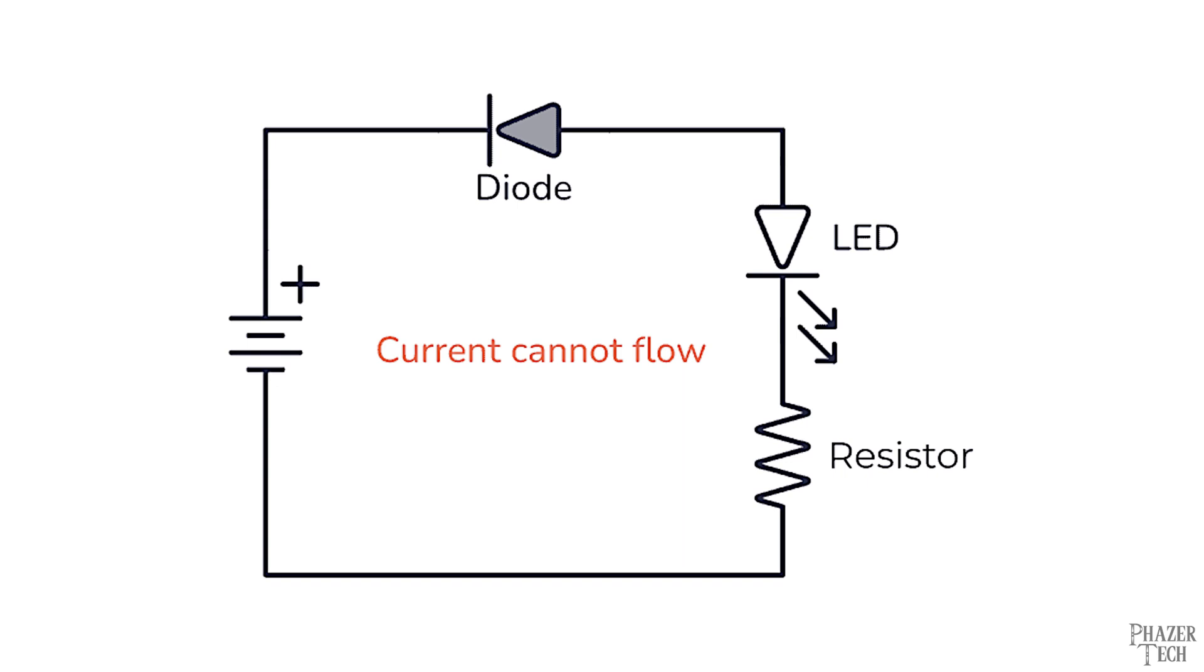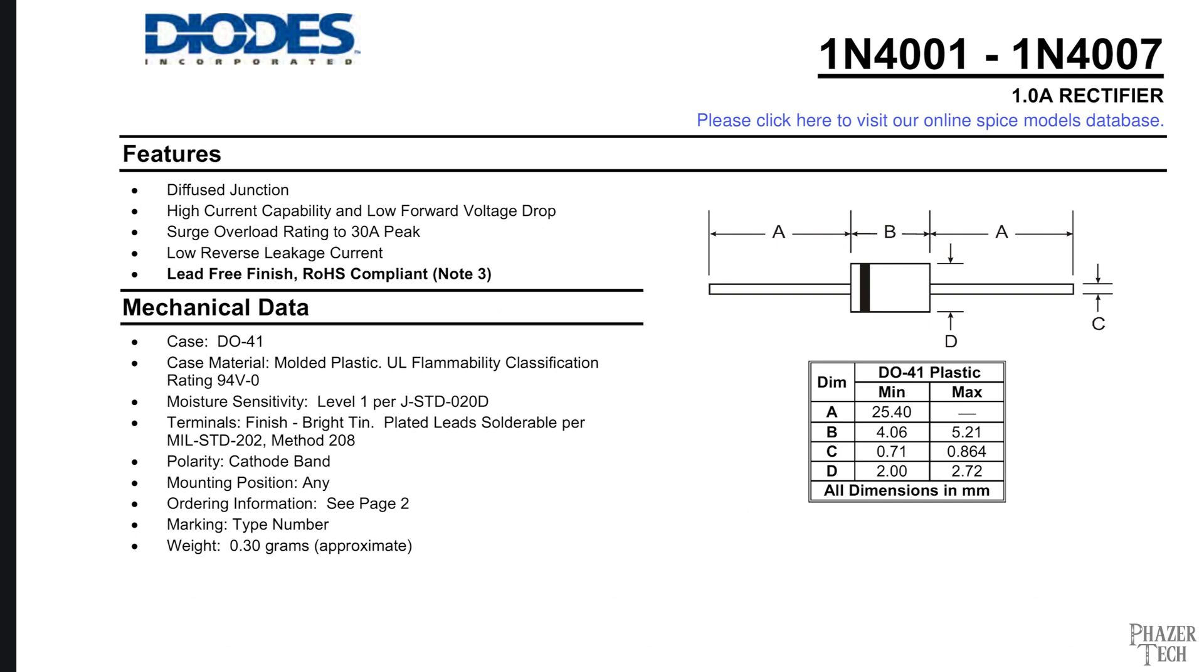However, diodes aren't perfect, so there still will be a tiny amount of current that leaks through the reverse direction diode. This is called the reverse leakage current, but in most cases the amount of current that leaks through is so tiny that it doesn't matter. However, there are other specifications to consider that can make a difference depending on your application. The specs for a specific type of diode can be found in its datasheet. This particular datasheet applies to seven different diode models.